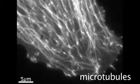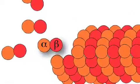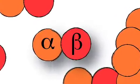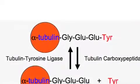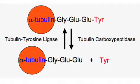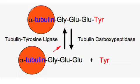Microtubules are made up of alpha and beta tubulin. These monomers can undergo several post-translational modifications, such as the removal of the carboxy terminal tyrosine residue of alpha tubulin by a carboxypeptidase, a process known as de-tyrosination. The tyrosine residue can be reattached by an enzyme called tubulin tyrosine ligase, or TTL, creating a cycle of tyrosine removal and re-addition.